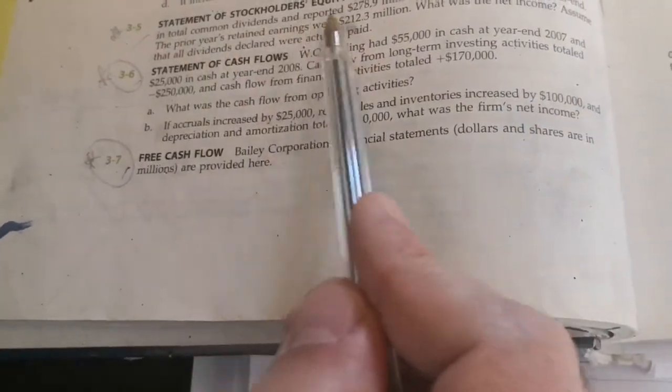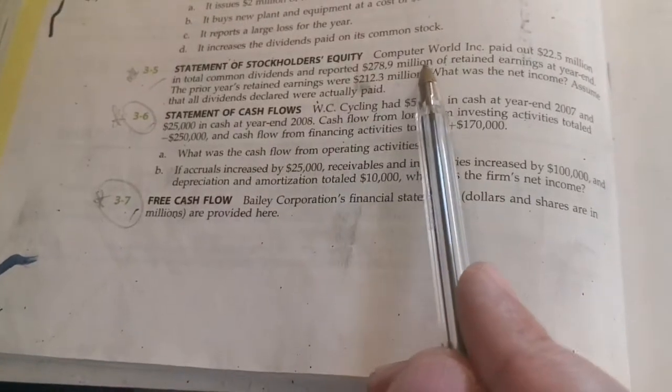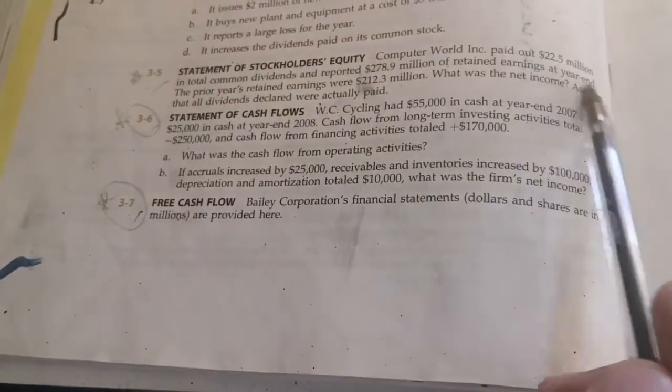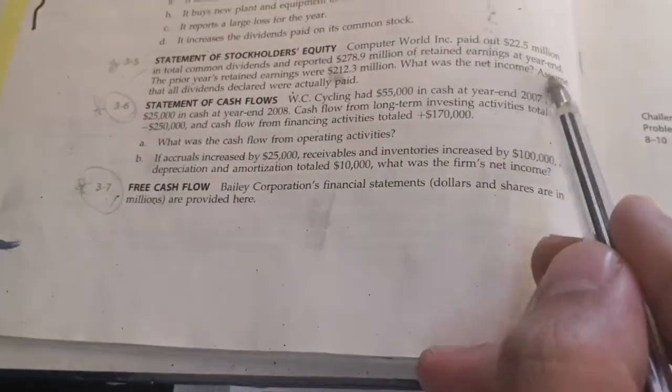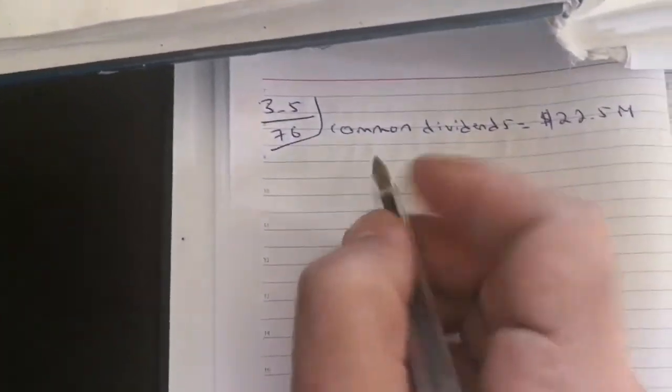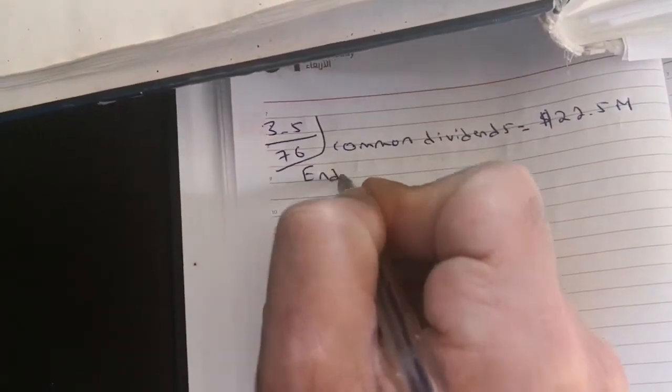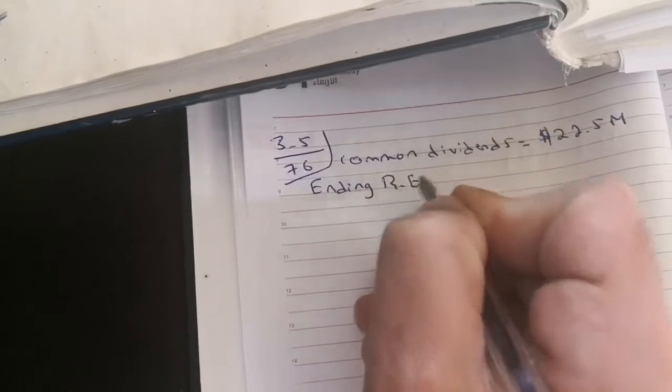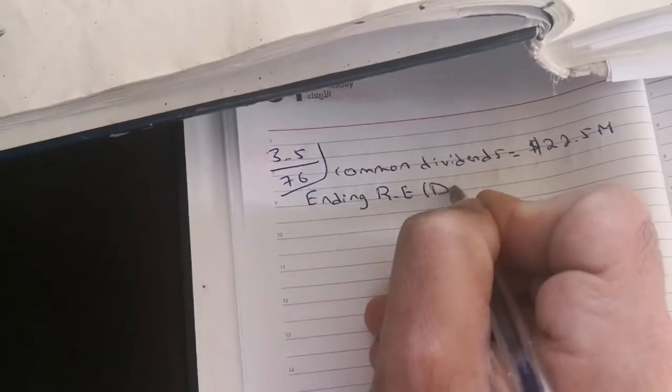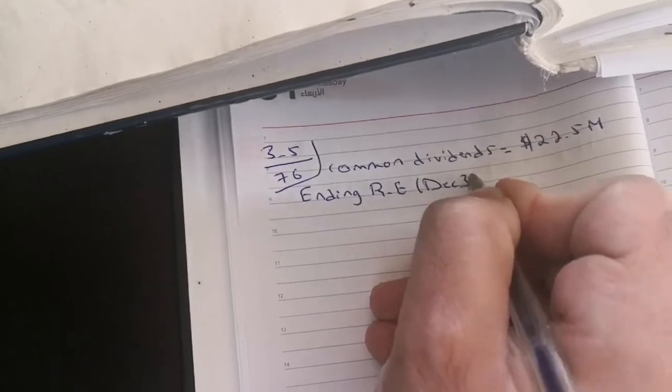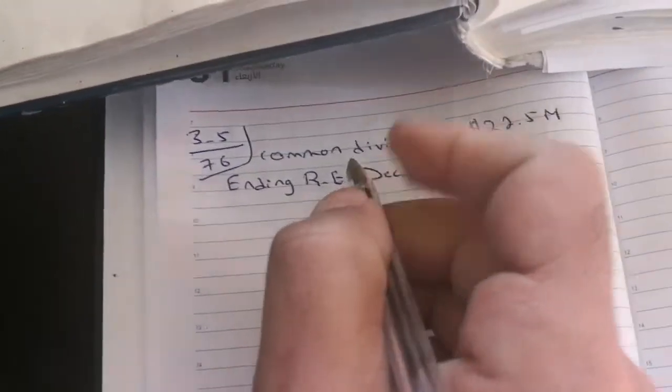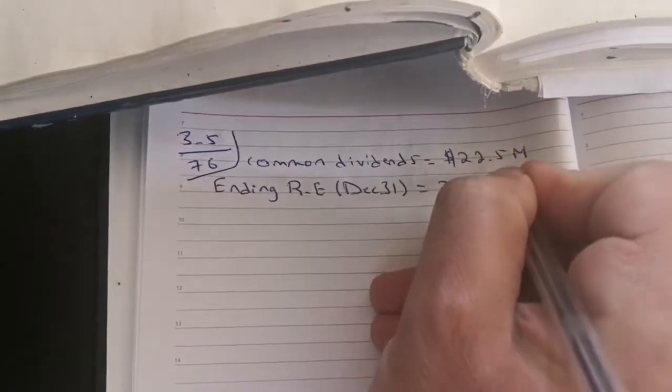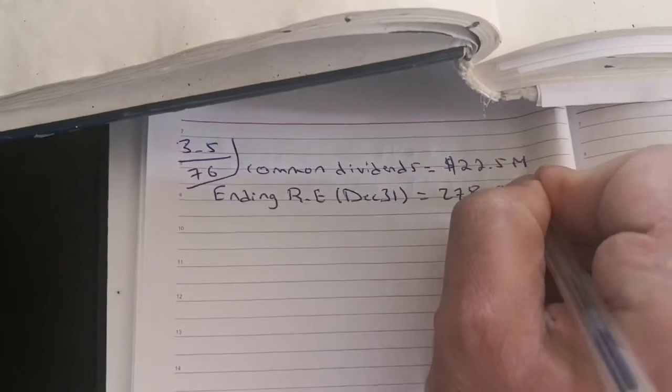And reported $278.9 million of retained earnings at year-end. So retained earnings at year-end means ending retained earnings, we abbreviate by RE. It is at year-end, means at December 31, equal to $278.9 million.